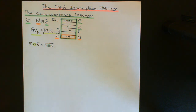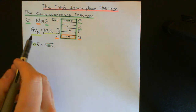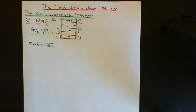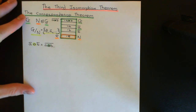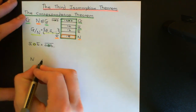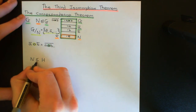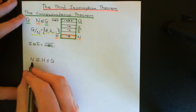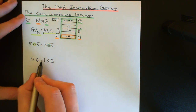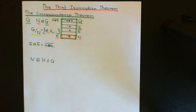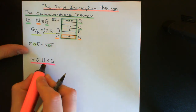The theorem states there is a bijective correspondence between all subgroups H of the initial group G which contain the normal subgroup N — so N is a subgroup of H, which is a subgroup of G — and subgroups of the quotient group G/N. N will be normal inside H because if N was normal inside G, it's certainly normal inside a subgroup of G that contains it.